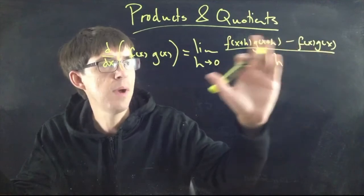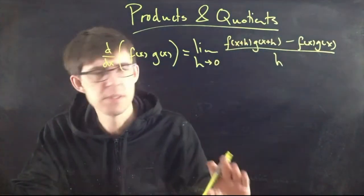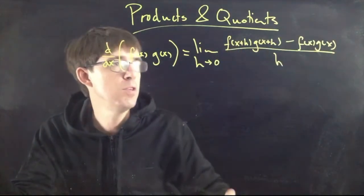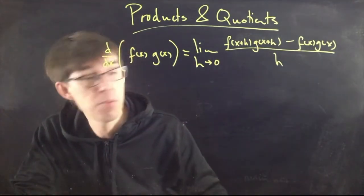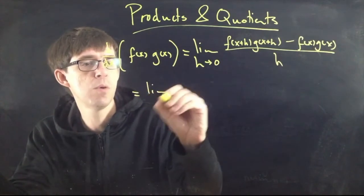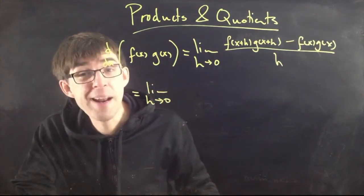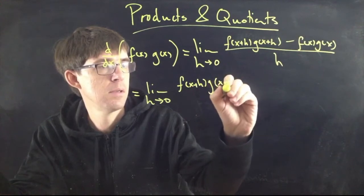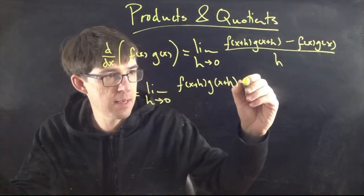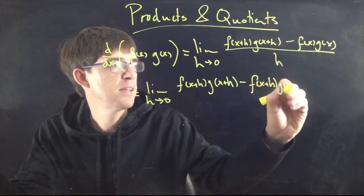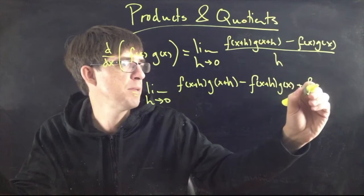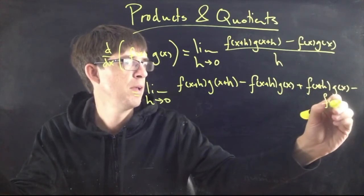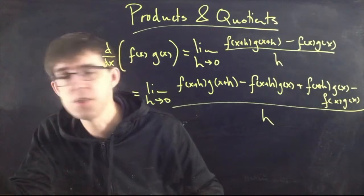So up here we see f(x+h) times g(x+h) — that's just plugging x+h into the product. Then you go minus the original function f(x) times g(x), all divided by h. Now we have to try and simplify this somehow. There is no simple way — you can't distribute f here because functions don't work that way. So you have to use a little trick: we're going to add and subtract the same thing.